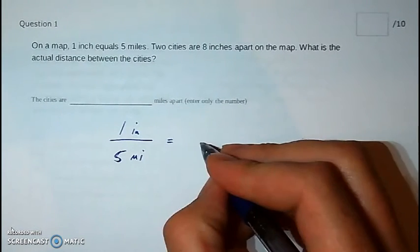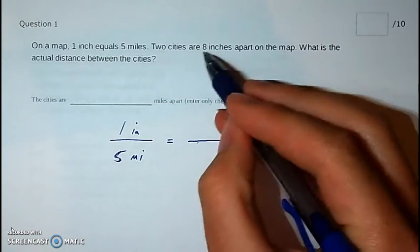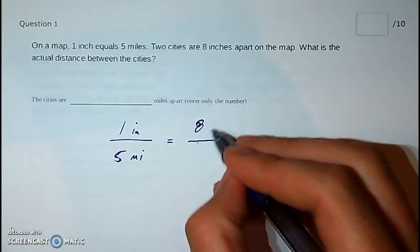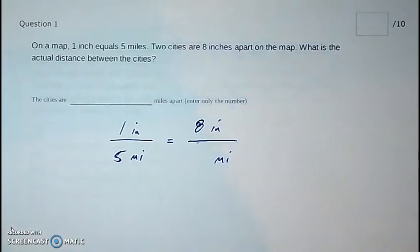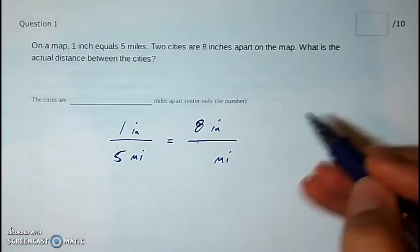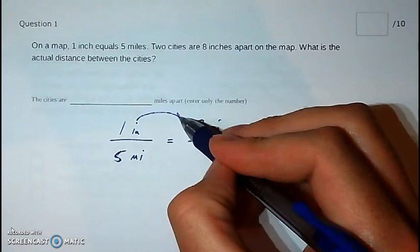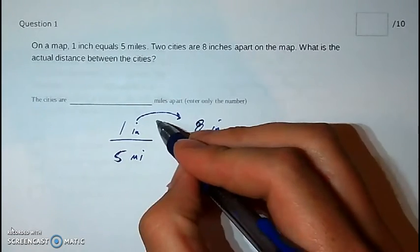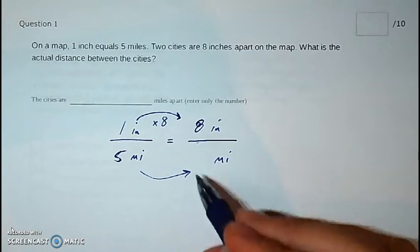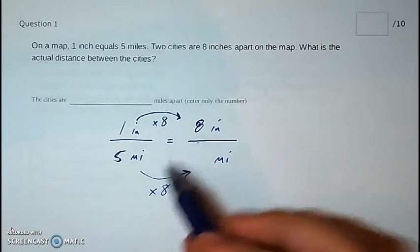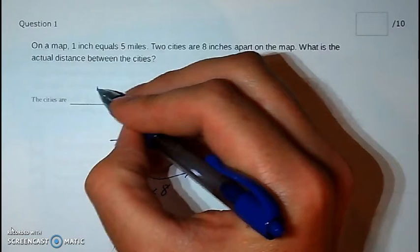If one inch is five miles in real life, then eight inches are how many miles? We can set up a simple proportion. How do I get from one to eight? You multiply by eight, and whatever you do to the top, you've got to do the same thing to the bottom. Times eight on both sides, so five times eight is 40 miles.